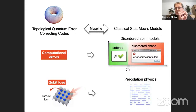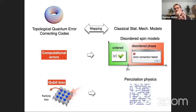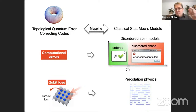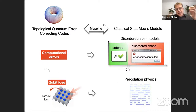How have people obtained these thresholds? For phenomenological noise models, one can map topological quantum error correcting codes to classical statistical spin models with disorder. From the phase transitions in the classical spin model one can identify phases where error correction works and disorder phases where it fails. I want to tell you now about a new connection between quantum error correcting codes and classical statistical physics having to do with percolation, which comes into play when we consider not computational errors but qubit loss.